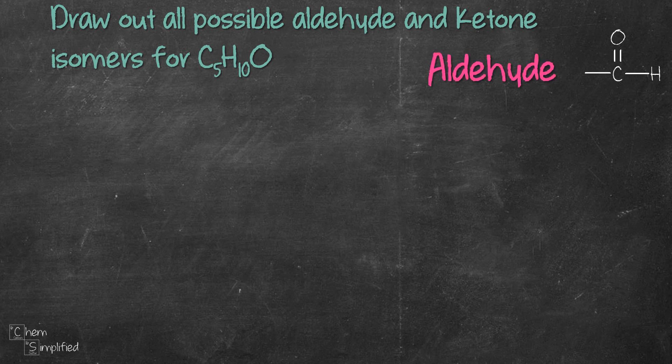Quick recap, aldehyde has a carbonyl functional group which is C double bond O connected right next to a hydrogen. Note that this CHO group is always at the first carbon for aldehyde whereas for ketone it has the same carbonyl group but it's next to two carbons so there's no hydrogen connected right next to the carbonyl group. That's the difference between aldehyde and ketone.